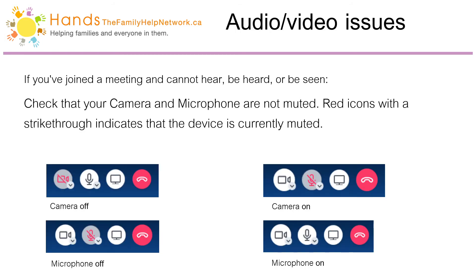For audio-video issues, if you've joined a meeting from your computer and cannot hear, be heard, or be seen, then follow the instructions below. Number one, check that your camera and microphone are not muted. Red icons with a strike-through indicate that the device is currently muted.